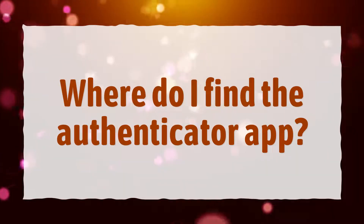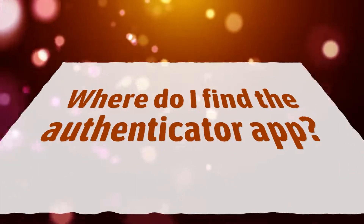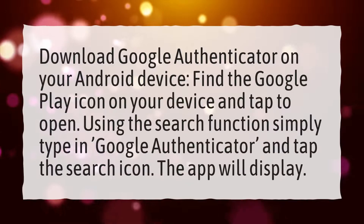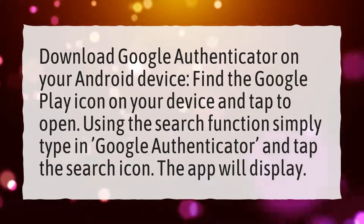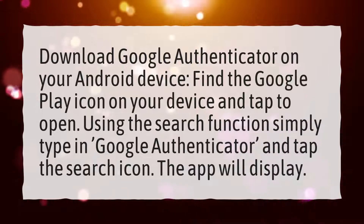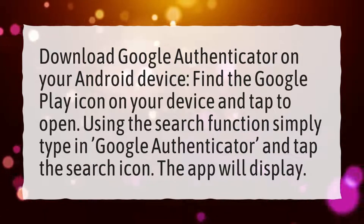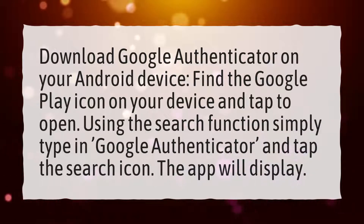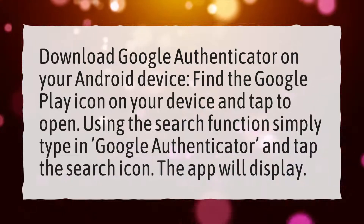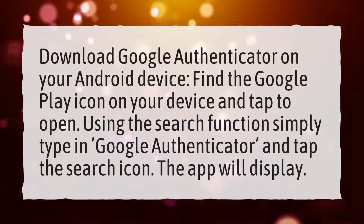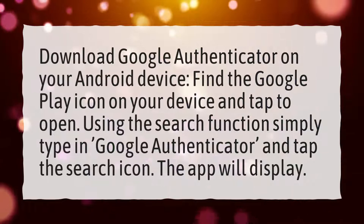Where do I find the Authenticator App? Download Google Authenticator on your Android device. Find the Google Play icon on your device and tap to open. Using the search function, simply type in Google Authenticator and tap the search icon. The app will display.